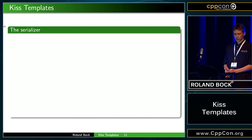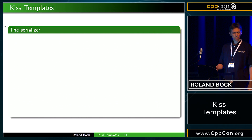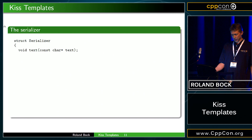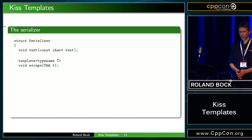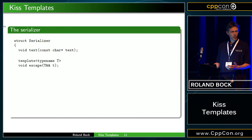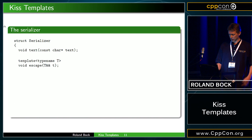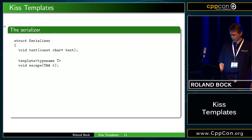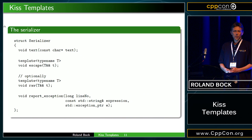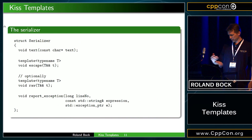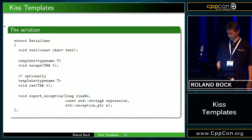What's left is the serializer. For some formats, there are serializers already existing. In case you have to write your own, it's also very simple — you need at least two functions. One takes text and does something with it. You have one function called escape, which takes whatever you want and does something useful with serializing and escaping. You might want a raw function depending on whether you need it. And you might also add a function for reporting exceptions, if one of your expressions could throw something — in that case the template gives you the line number, the expression that threw the exception, and the exception pointer.